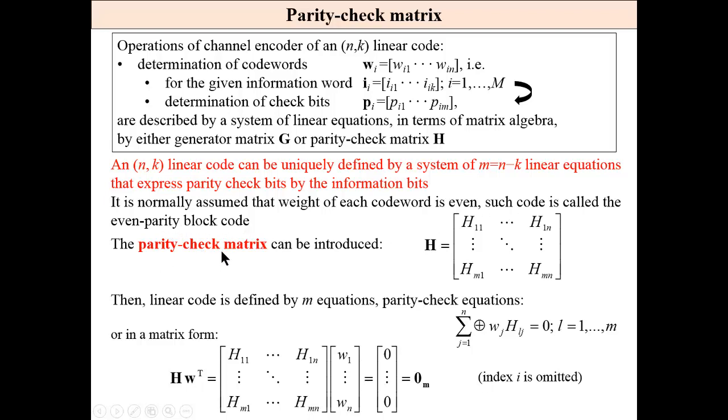Parity check matrix or parity check code. These terms will be used further on. Parity check matrix can be introduced. This matrix contains as many rows as we have parity check bits and m columns. And from each row we may calculate one parity check bit.